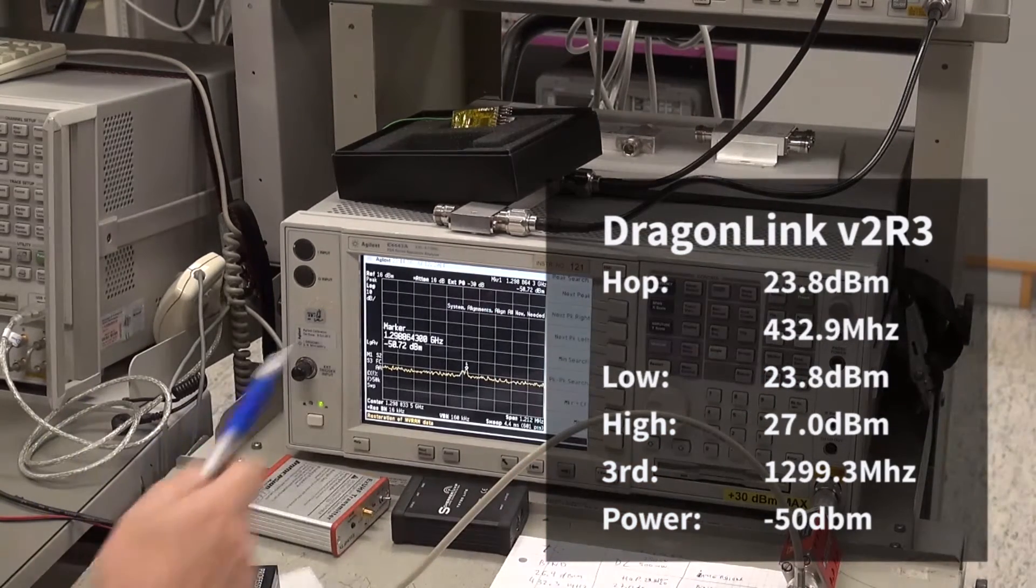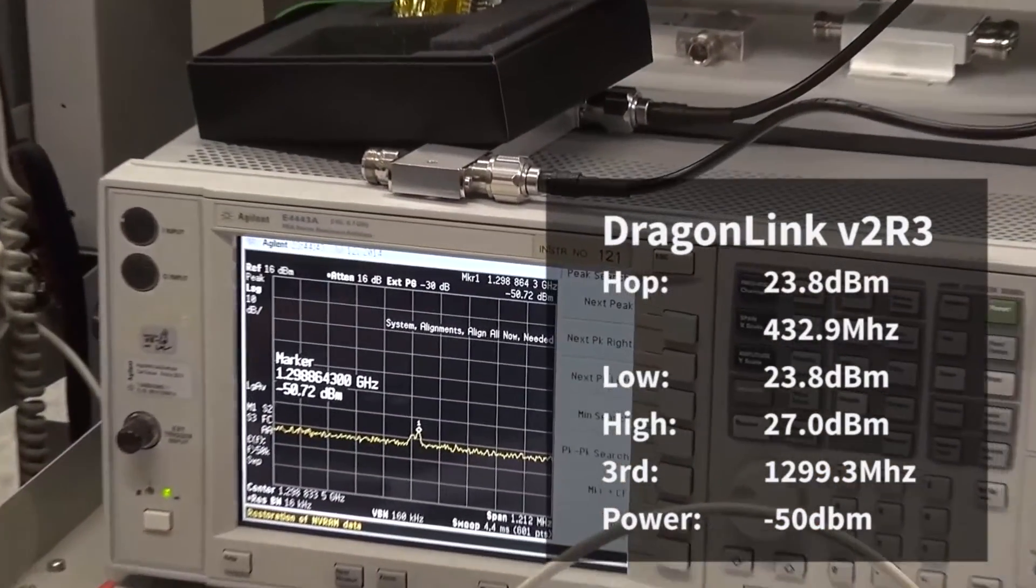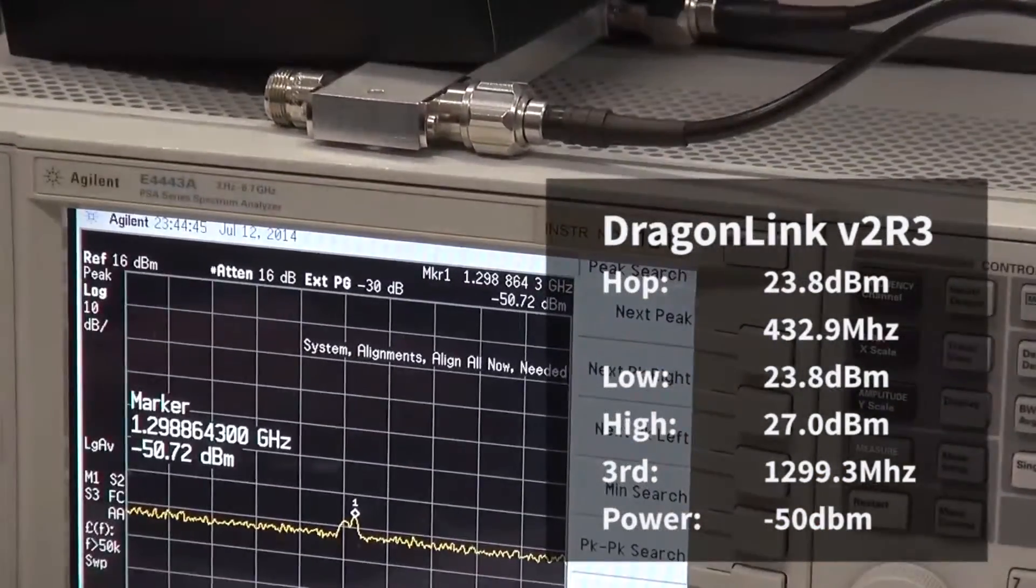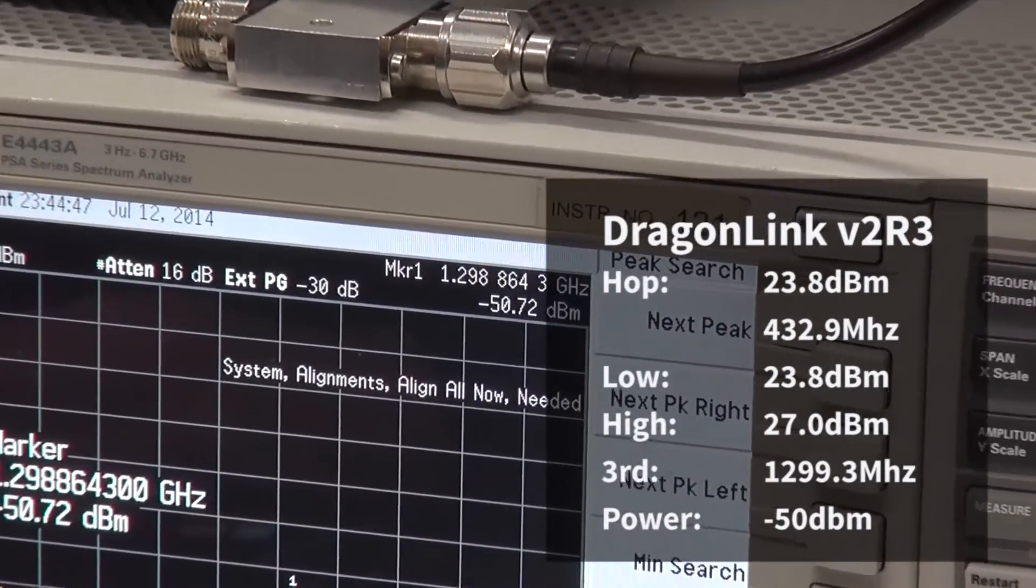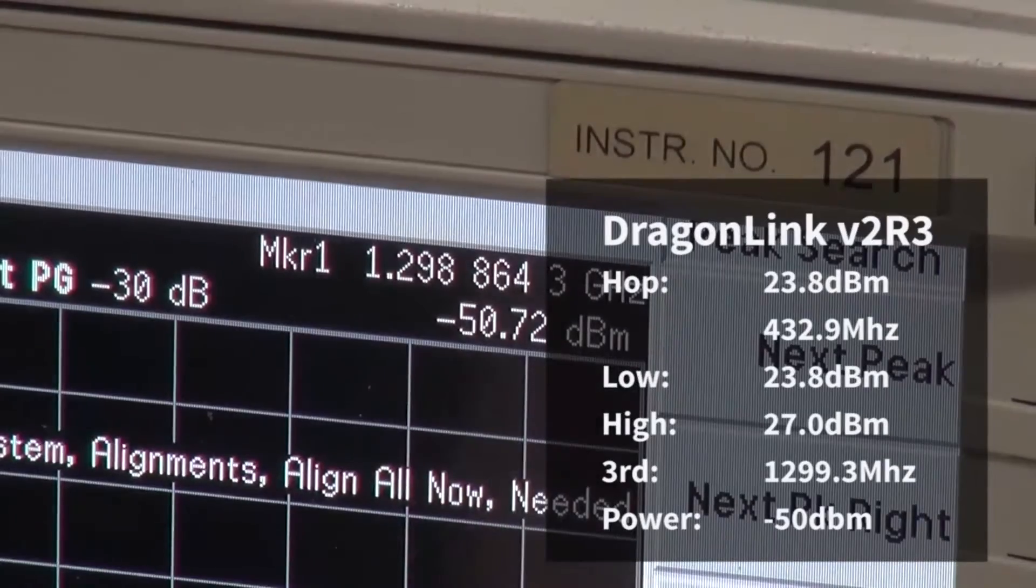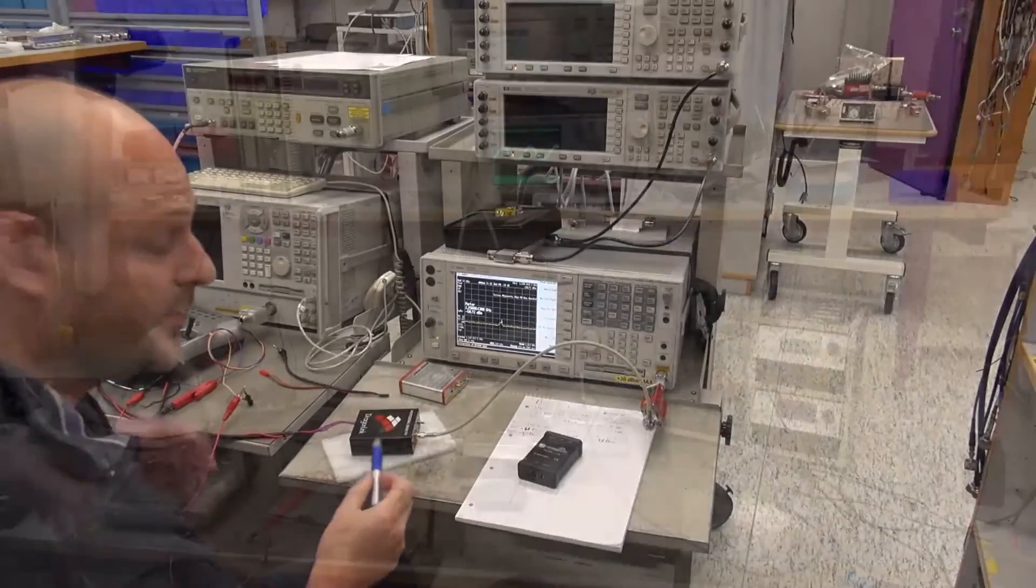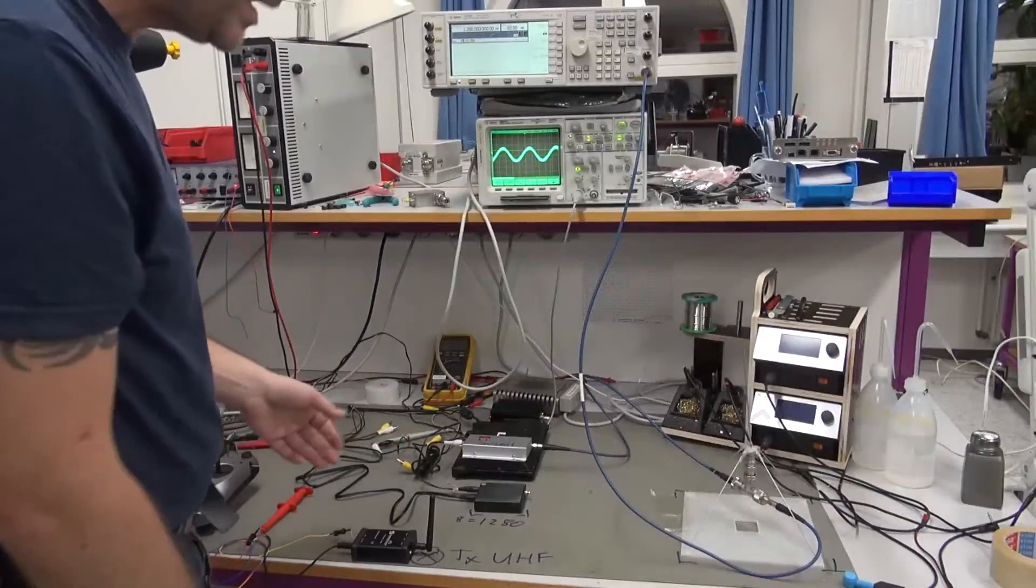The third harmonic is minus 50 dBm. This is 14 dB more powerful harmonics compared to the best in class.